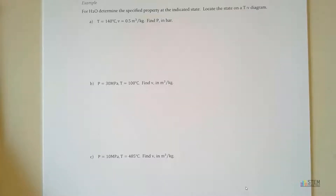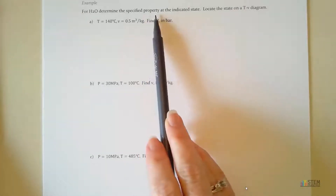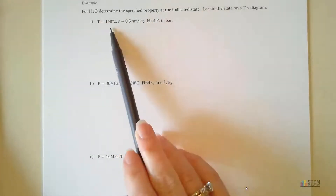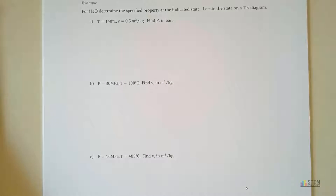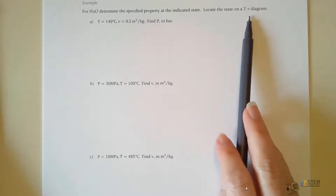We are going to have example after example of steam tables in this video. Hopefully you'll find it helpful and it'll help you understand how to choose which table and which conditions you're operating under. What we've got here is water, and in each case we've got some properties given to us and we want to find the specified property. We're also going to locate our state on the TV diagram.